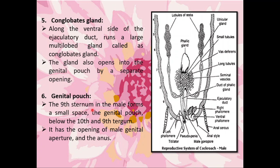The sixth part of the male reproductive system is the genital pouch. The ninth sternum in the male forms a small space called the genital pouch, located below the tenth and ninth tergum. It has the opening of the male genital aperture and the anus. Both the anus and the male genital aperture open through this genital pouch.